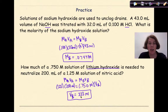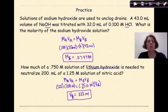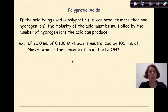You can always plug that number back into your formula to verify: molarity times volume gives you moles, and the two mole values should be equal to each other. Now let's talk about polyprotic acids.